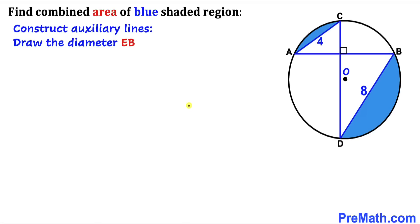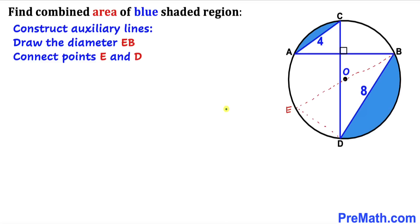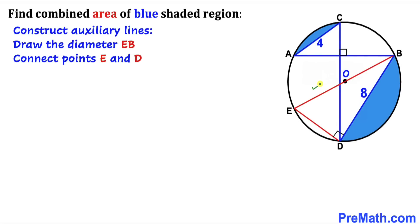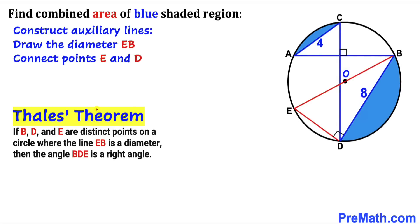Let's draw some auxiliary lines. We draw the diameter that passes through the center O, and this is our point E. So our diameter is EB. We then connect points D and E. Now let's recall Thales' theorem: if we have points B, D, and E on the circle where line EB is the diameter, then angle BDE is going to be 90 degrees.